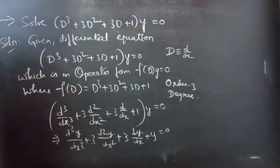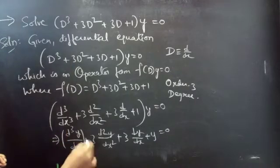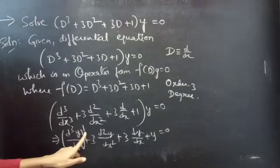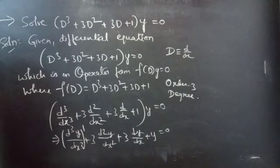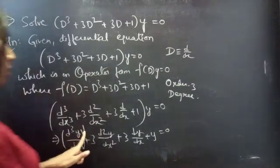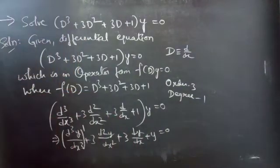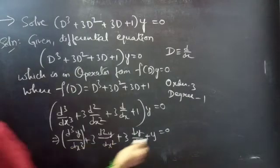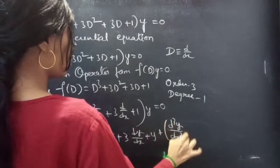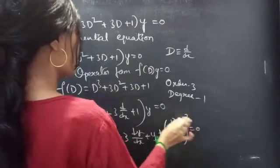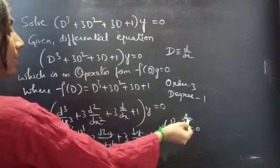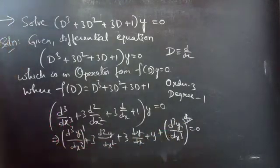The degree is the highest power of the highest derivative. Here the power of the highest derivative is 1 — we have only one highest derivative — so the degree is 1. If we had a term like (d³y/dx³)² or power 4, then we would choose that as the degree, since it would be the highest power of the highest derivative.